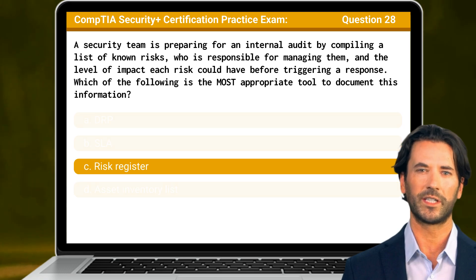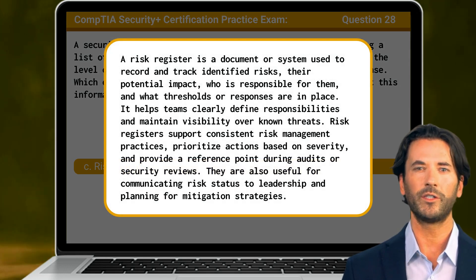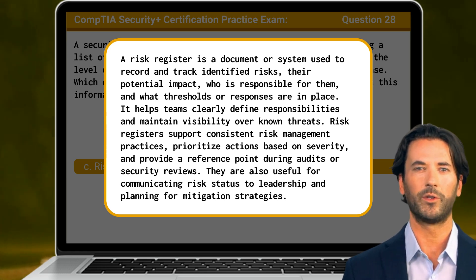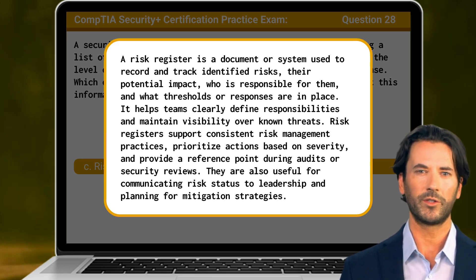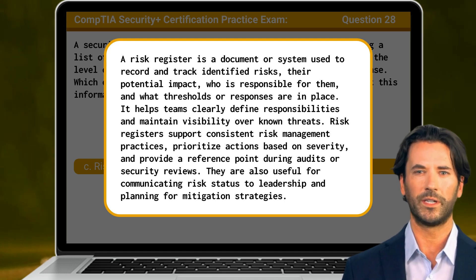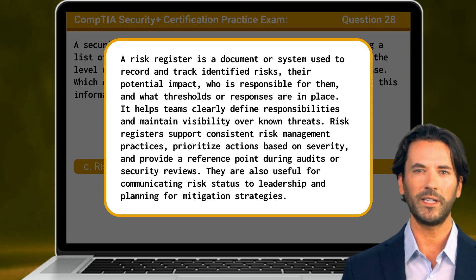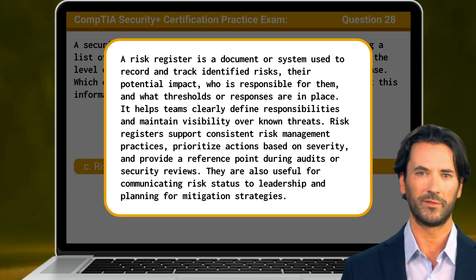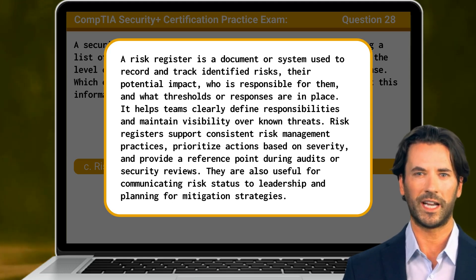The answer is C. Risk Register. A risk register is a document or system used to record and track identified risks, their potential impact, who is responsible for them, and what thresholds or responses are in place. It helps teams clearly define responsibilities and maintain visibility over known threats. Risk registers support consistent risk management practices, prioritize actions based on severity, and provide a reference point during audits or security reviews. They are also useful for communicating risk status to leadership and planning for mitigation strategies.